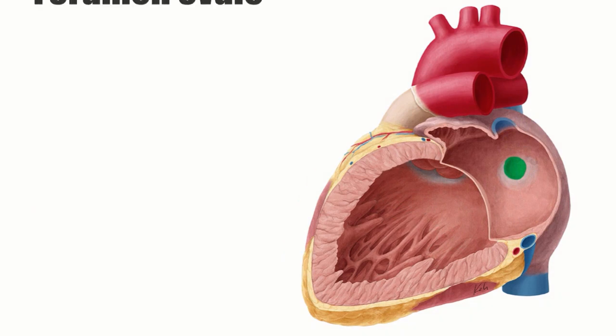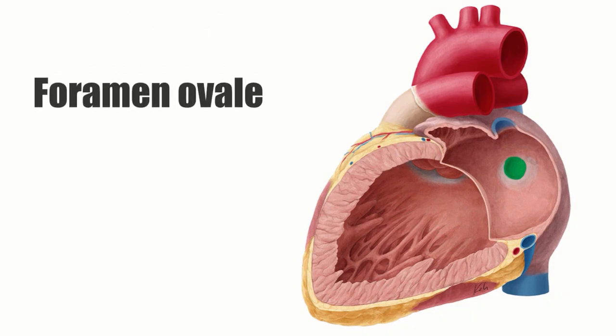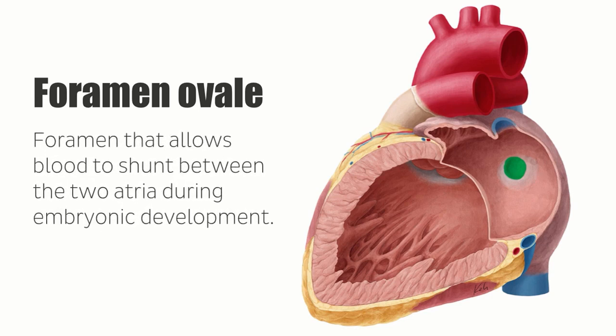The main anatomical structure of note is the foramen ovale, which is a foramen within the atrial walls that allows blood to shunt between the two atria during embryonic development. Normally, around the time of birth, this hole in the cardiac wall closes; otherwise it is known as a congenital heart defect named patent foramen ovale. It is not, however, generally problematic in child or adulthood.